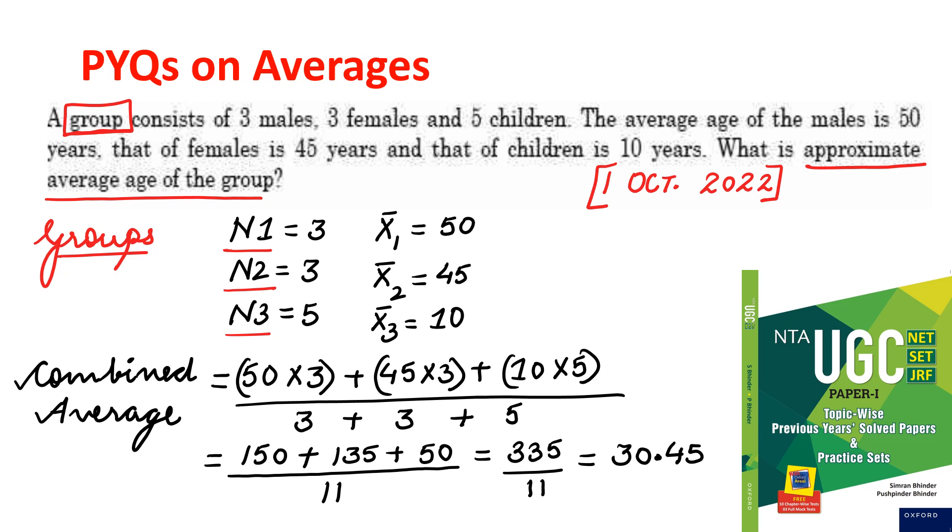Next, we will discuss PYQs, that is previous year questions on averages topic. I have picked these from UGC net exam. These are latest questions which have been asked in UGC net final exam. So prepare these formulas, prepare these questions very well. Don't worry. Read the question carefully and you will be able to attempt the question.